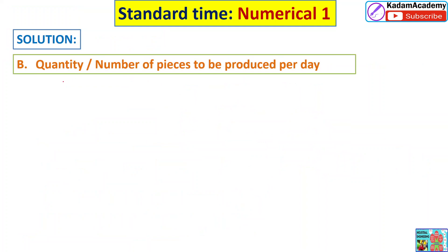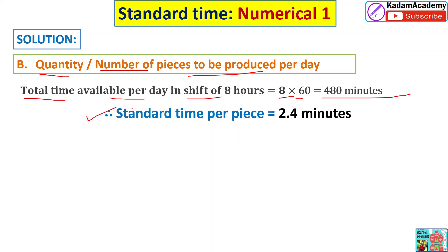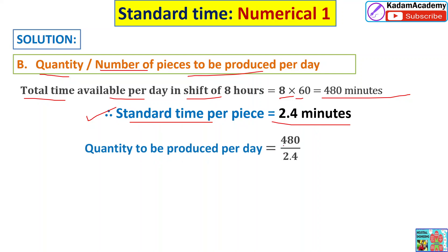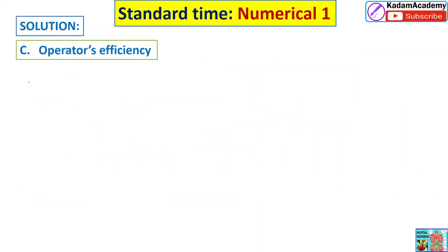Next, part B: determine the quantity or number of pieces to be produced. Total time available per day in one shift is 480 minutes. Standard time per piece is 2.4 minutes. Quantity to be produced = 480 divided by 2.4, which equals 200 pieces per day. This is the second answer.